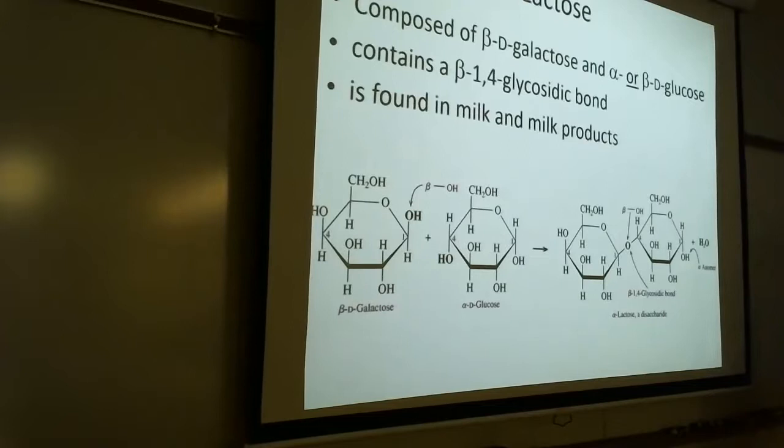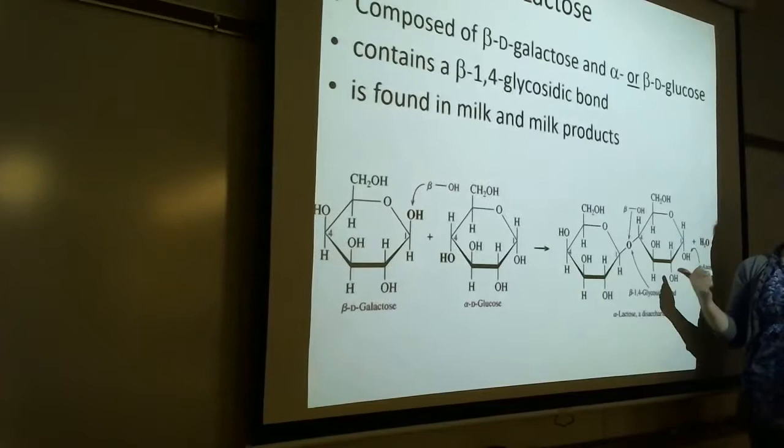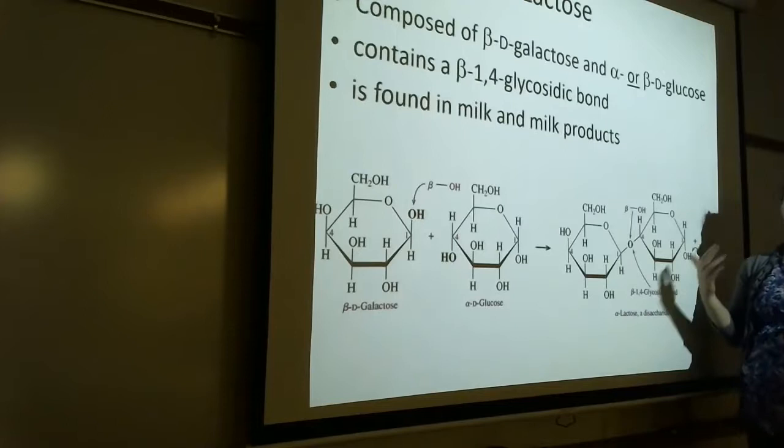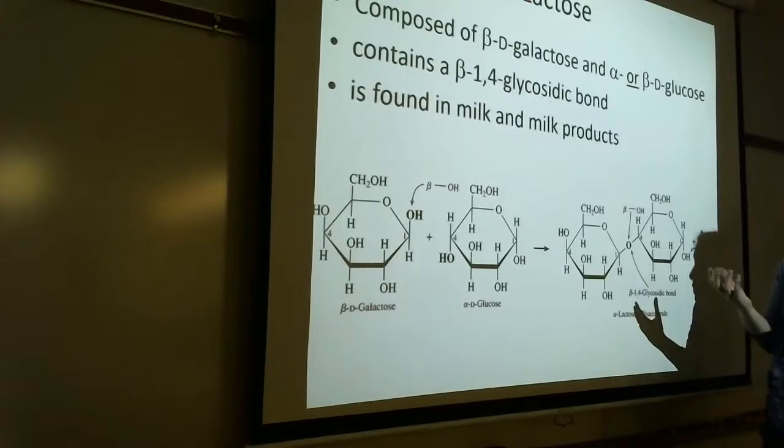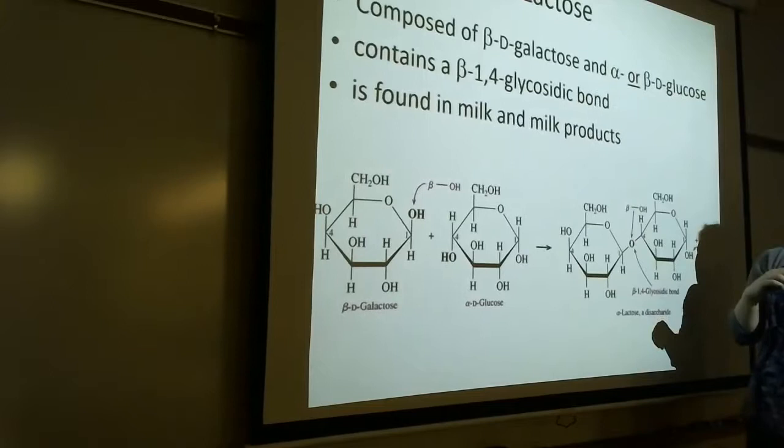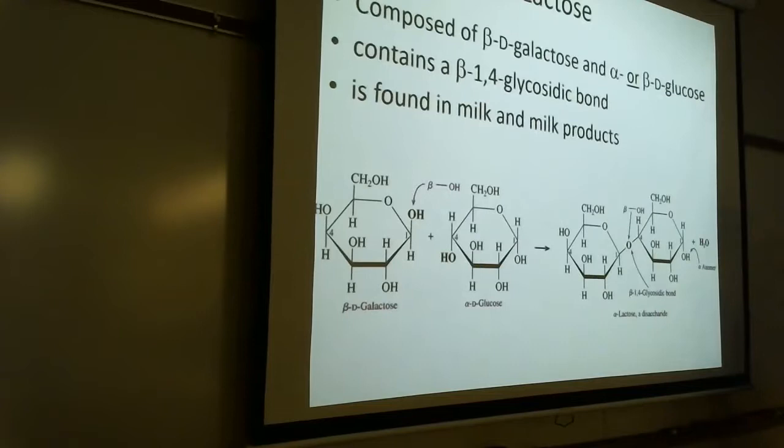Here's lactose. It has a beta 1, 4 glycosidic bond. Now, I'm not going to make you memorize which ones have alphas and which ones have betas. But if I give you the structure and say circle the glycosidic bond and identify the type, that's what I expect you to do. I'm not going to make you draw it. But I could say, you hydrolyze glucose. Hydrolyze means you break it up. So if I said, you hydrolyze lactose, what two sugar monosaccharides are you going to get? You would need to know that. I could say draw the two products of the hydrolysis of lactose in the alpha configuration or something like that. So just be prepared for something like those kinds of things.